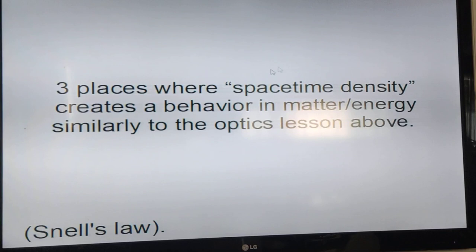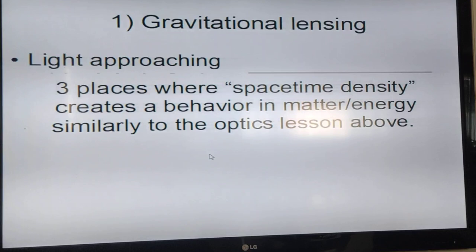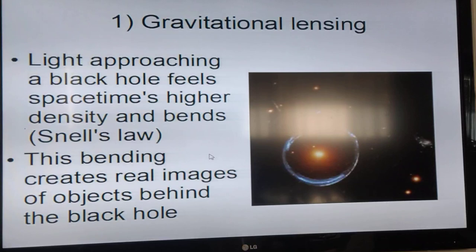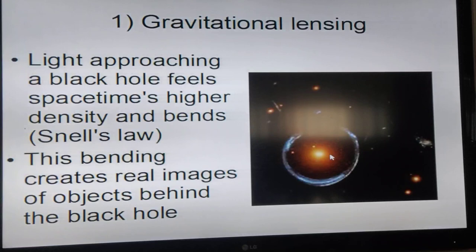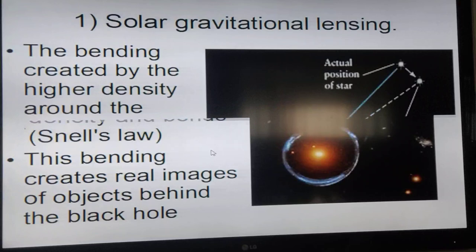There are three places where space-time density creates a behavior in matter or energy that's similar to the optic lens. The first place is what we call gravitational lensing or Einstein rings. Light approaching a black hole feels the higher density space and bends like in Snell's Law. This bending will create a real image of objects that are behind the black hole.